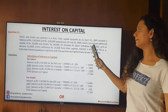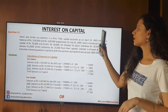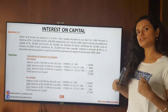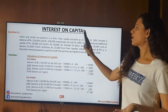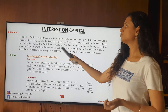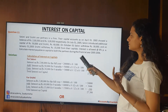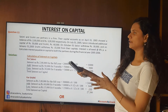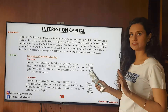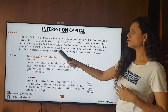Example three: Saloni and Srishti are partners in a firm. Their capital accounts as on April 1st, 2005 showed balances of two lakhs and three lakhs respectively. On July 1st, 2005, Saloni introduced additional capital of fifty thousand and Srishti sixty thousand. On October 1st, Saloni withdrew thirty thousand, and on January 1st, Srishti withdrew fifteen thousand from their capitals. Interest is allowed at 8% per annum. Calculate the interest payable on capital to both partners during the financial year 2005–2006.